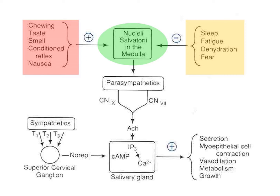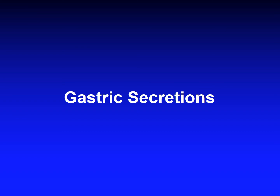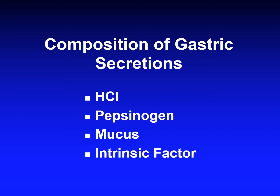Now we'll move to the gastric secretions. There are four gastric secretions: hydrochloric acid, pepsinogen, mucus, and intrinsic factor. Hydrochloric acid from the parietal cells converts pepsinogen to pepsin, which is important in the digestion of protein. Hydrochloric acid is also bacteriostatic — it stops bacterial growth.